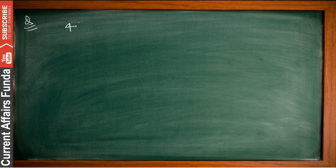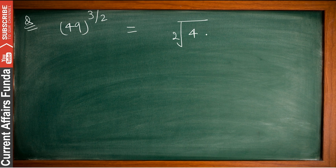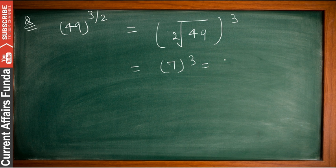Suppose you have another question: 49 to the power 3 by 2. That means the square root of 49, raised to the power 3. The square root of 49 is 7, so 7 to the power 3 equals 343. Your answer is 343.